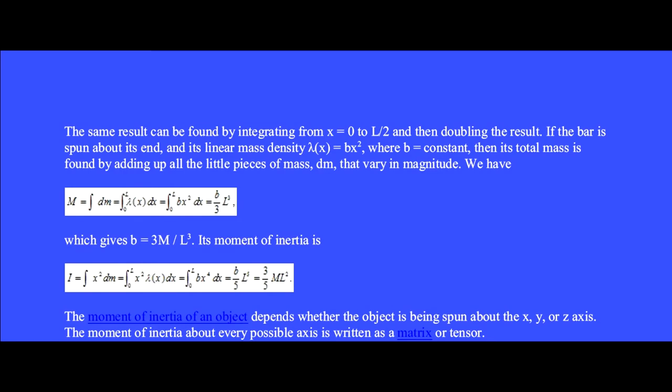If the bar is spun about its end and its linear mass density lambda of x equals bx squared, where b is a constant, then its total mass is found by adding up all the little pieces of mass dm that vary in magnitude. The total mass M equals the integral of dm, but dm is lambda dx, which we integrate from 0 to l. Putting lambda equal to bx squared and integrating, we get b over 3 times l cubed, which gives b equals 3m over l cubed.